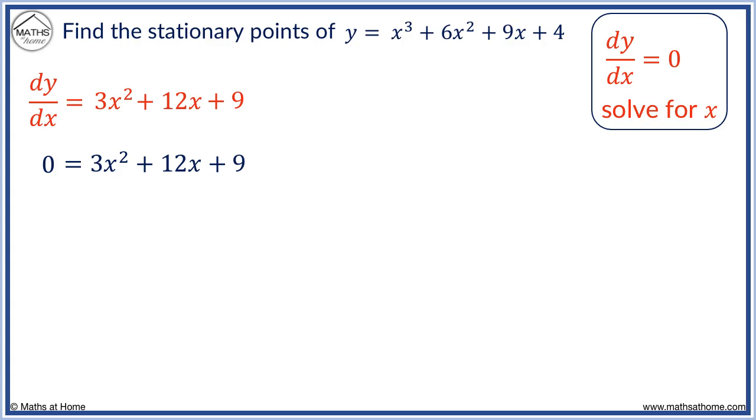This is a quadratic, so we can solve it by factorising. We can first divide each term by 3. We can factorise to get 0 equals x plus 1, x plus 3. This is since 1 and 3 add to make 4, and multiply to make 3. We solve this by finding the value of x that makes each bracket equal 0. We get x equals minus 1 and x equals minus 3.